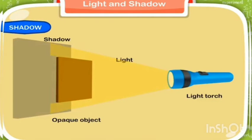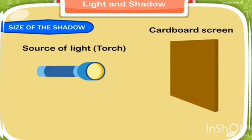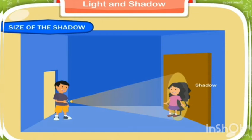Opaque objects form shadows. Let us study the size of shadows. Take a source of light and a cardboard screen. Place the cardboard screen in a dark room. Ask your sister to stand in front of the screen. Now light a torch and see the shadow of your sister. We will see that the size of the shadow is equal to the size of your sister.